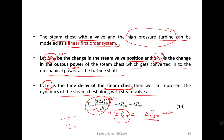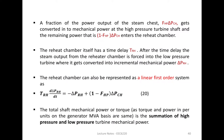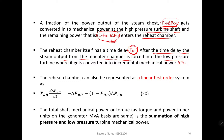The fraction of the power output from the steam chest converted into mechanical power at the high pressure turbine is FHP times delta PCH. The remaining steam that does not get converted at the high pressure turbine goes into the reheat chamber. The reheat chamber itself is modeled as a time delay TRH — the time delay of the reheat chamber.